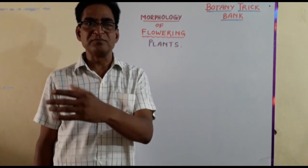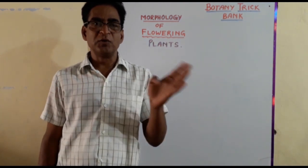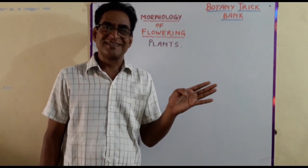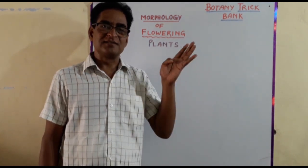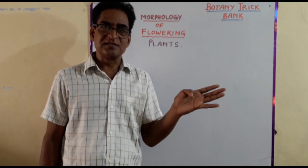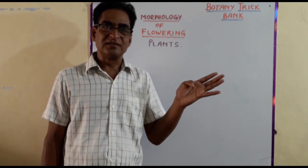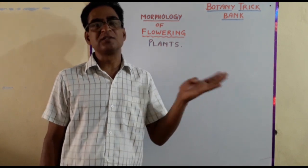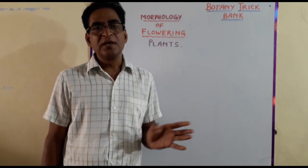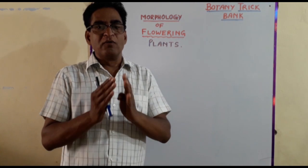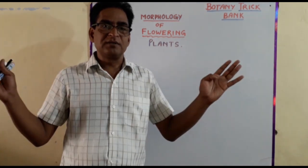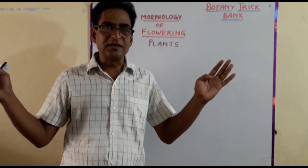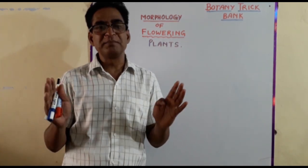We have seen the stems, roots, leaves, inflorescence, seed dispersal. It is a wide, broad chapter with many things and many examples.